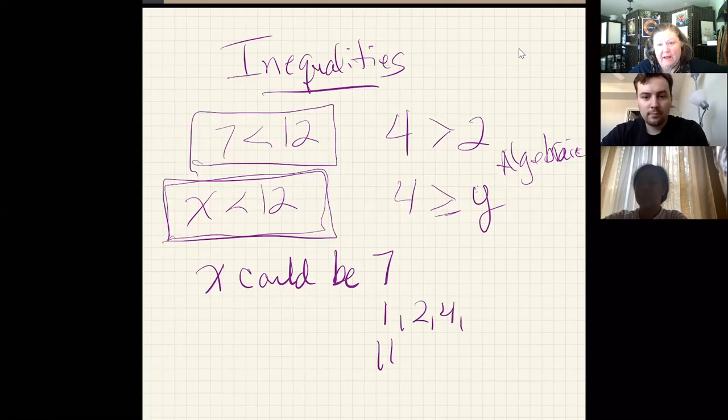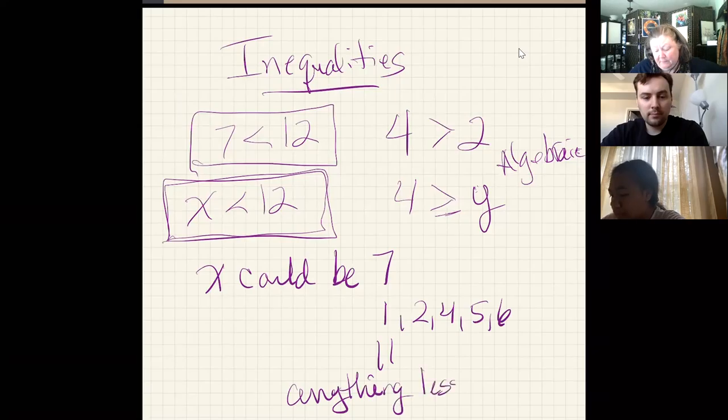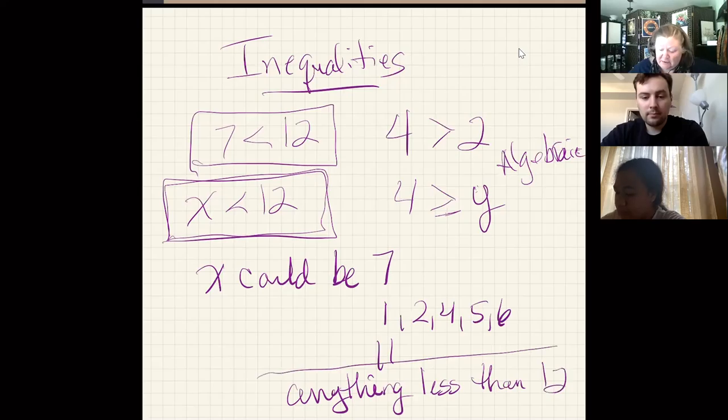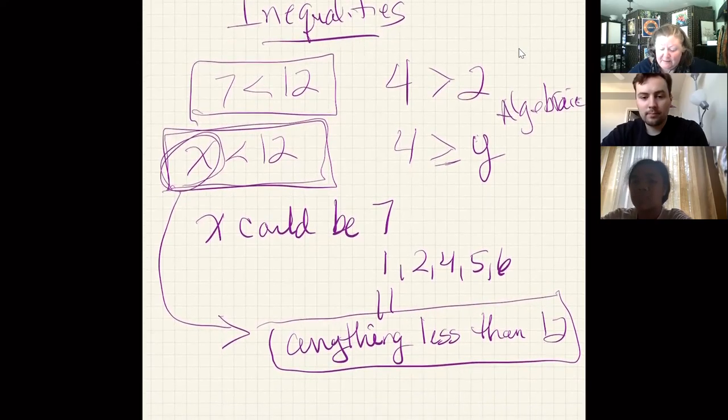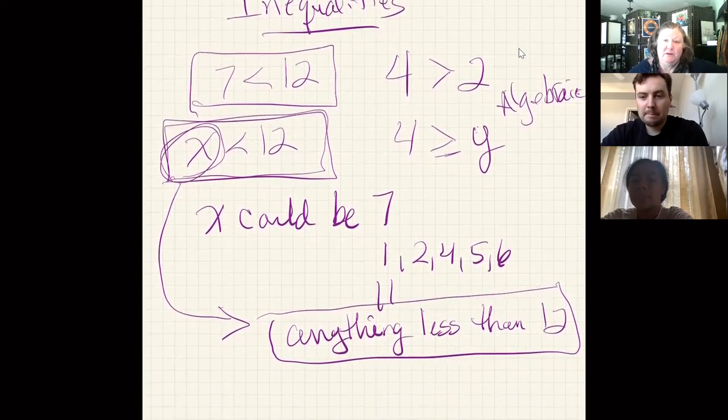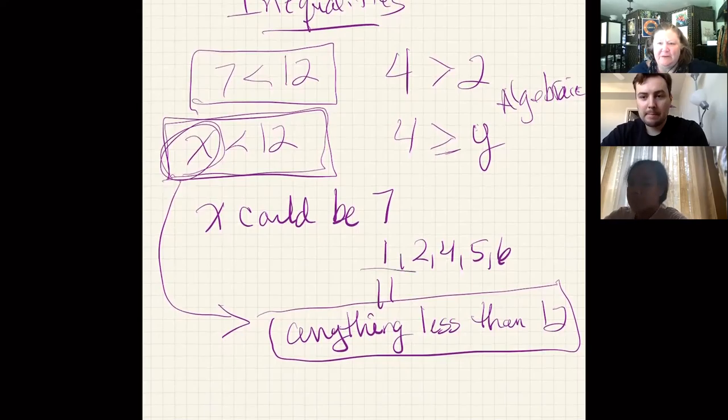Matthew said 1. Bernadette said 11. Jawan's got a whole list. It could be 1, 2, 4, 5, 6. Mele and Erish both said anything less than 12. And what I see from Mele and Erish is basically taking this inequality and putting it into words. We're saying that this x is any number less than 12.